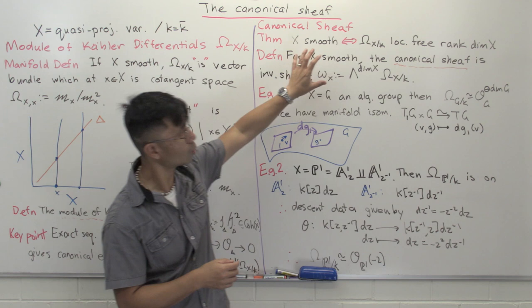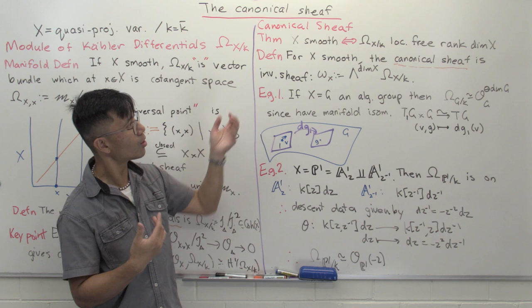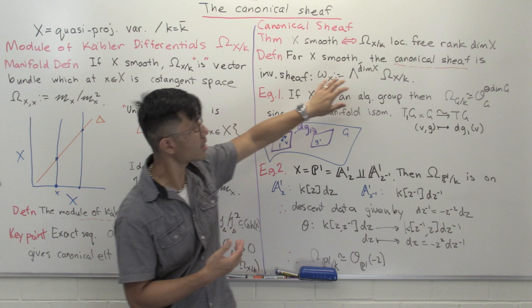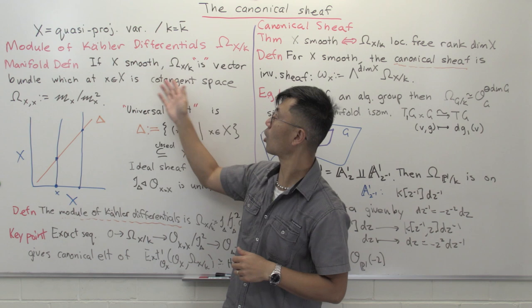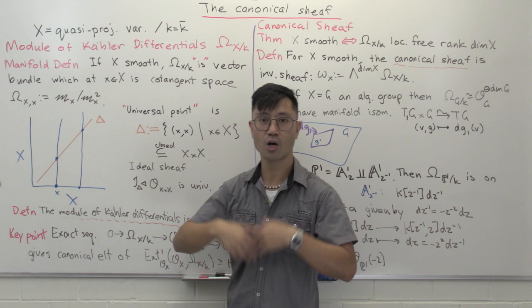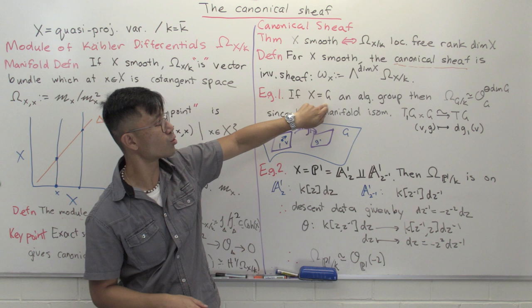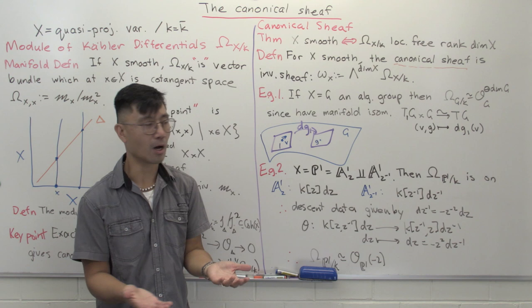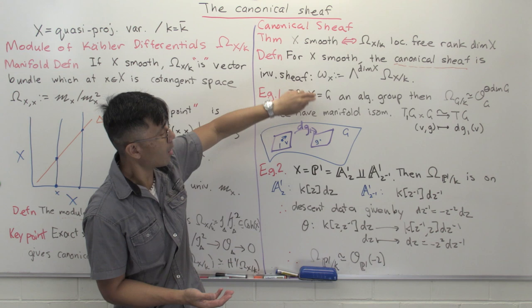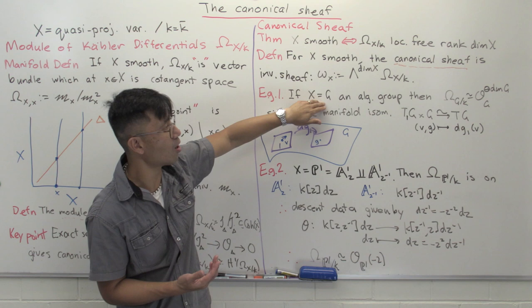I want to finish this video by giving some examples. In the manifold situation it's quite easy to understand: you take the cotangent bundle and just take the top exterior product of that cotangent bundle to get a line bundle. In this first example, X is an algebraic group — this could be GL_n over C, SL_n over C, a product of copies of C^*, or even an elliptic curve. In this case the module of Kähler differentials is actually a free sheaf — just a number of copies of the structure sheaf O_G — and the number of copies equals the dimension of G.